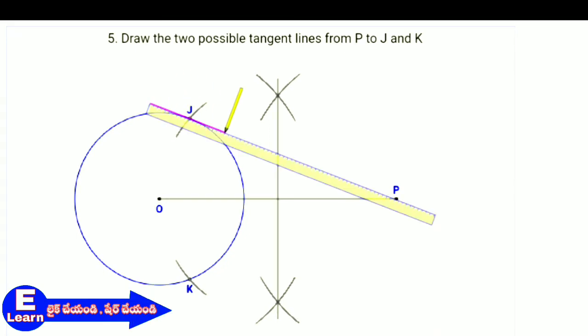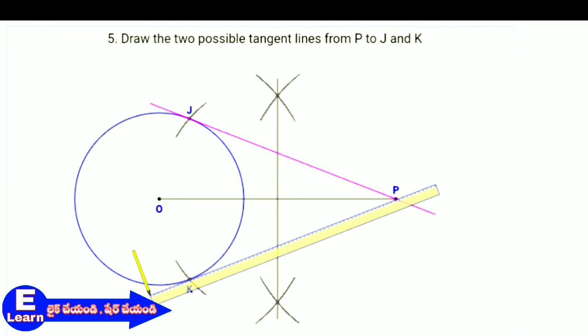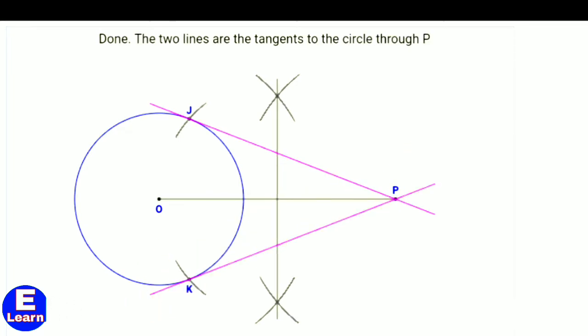Draw the two possible tangent lines from P to J and K. These two lines are the tangents to the circle from external point B.